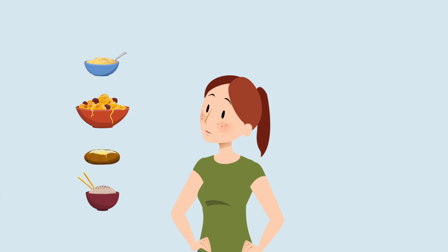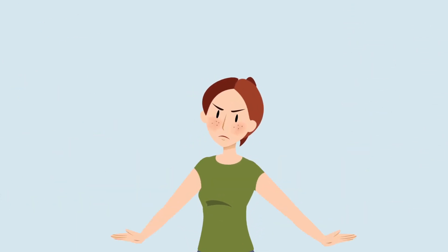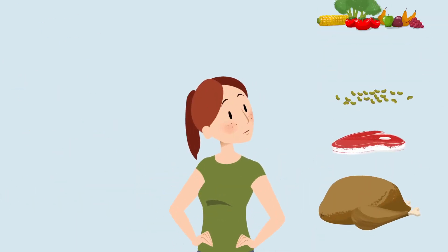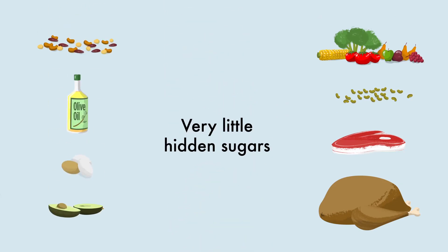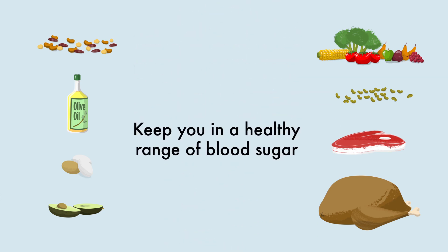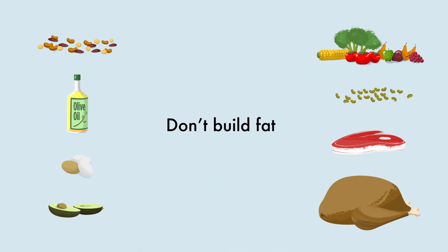The answer is, focus on good proteins, healthy fats, and high fiber carbohydrates. These types of foods have very little hidden sugars, they keep you in a healthy range of blood sugar so you don't build fat and you help prevent diabetes.